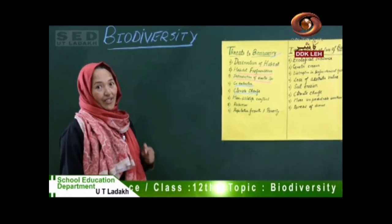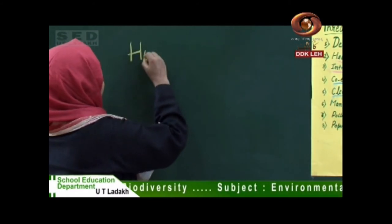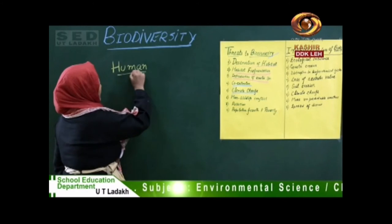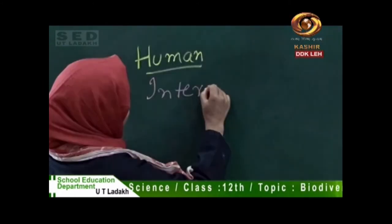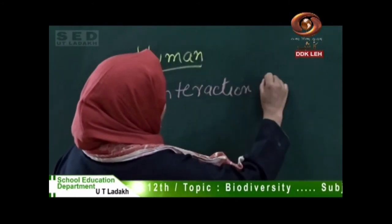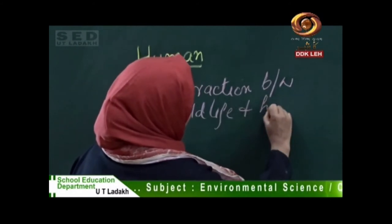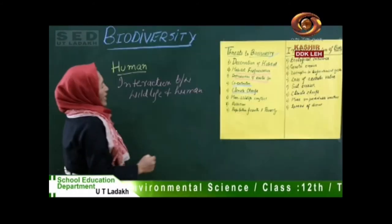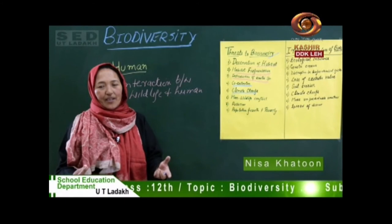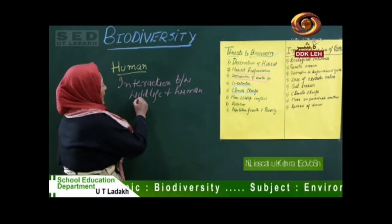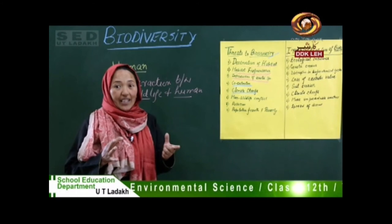I'll continue my lecture on threats to biodiversity. Today I'm going to explain about man and wildlife conflict. In human and wildlife conflict, there is an interaction between wildlife and humans, and conflicts occur when there is a population increase and natural habitat shrinking. Both wildlife and humans compete with each other for space and food, which threatens biodiversity.